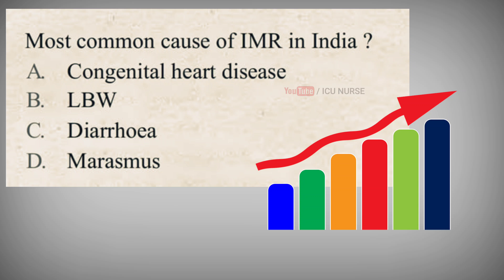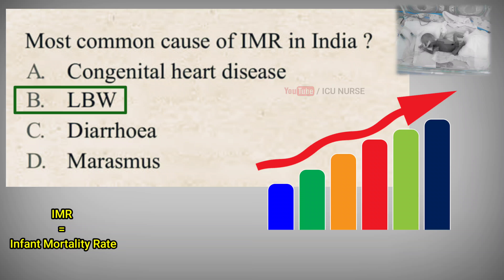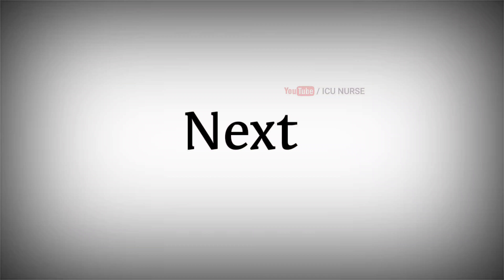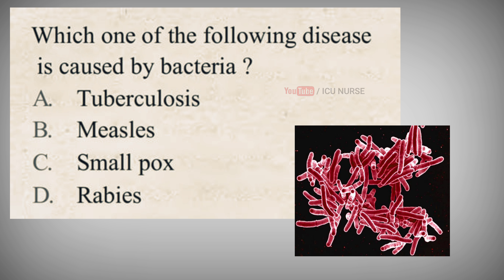Most common cause of IMR in India? A. Congenital heart disease, B. LBW, C. Diarrhea, D. Marasmus. The correct answer is B. LBW. IMR stands for infant mortality rate, whereas LBW stands for low birth weight. The low birth weight infant remains at much higher risk of mortality than the infant with normal weight at birth.